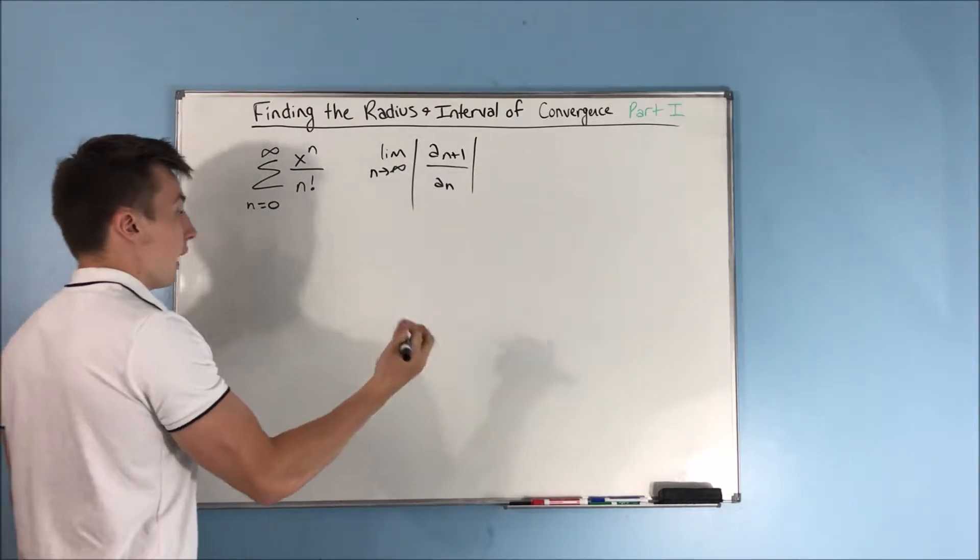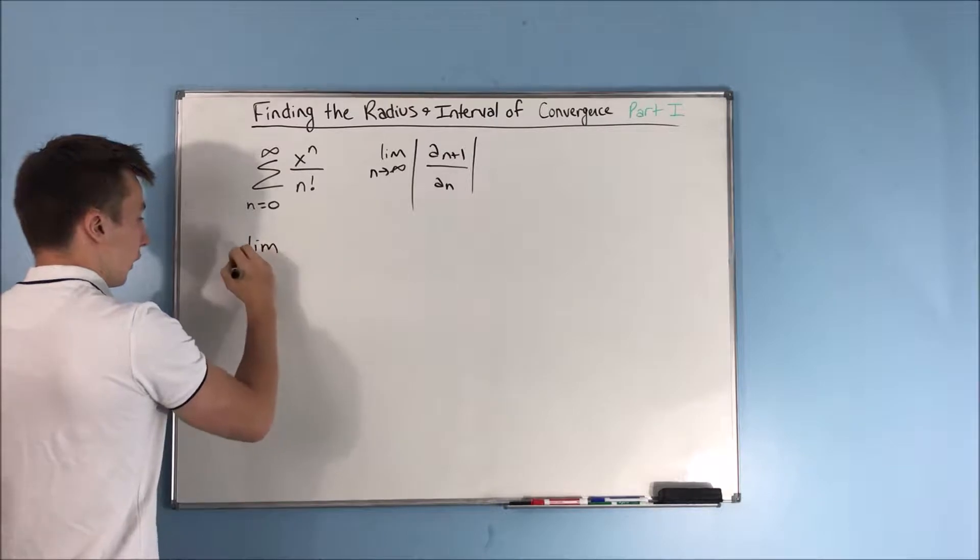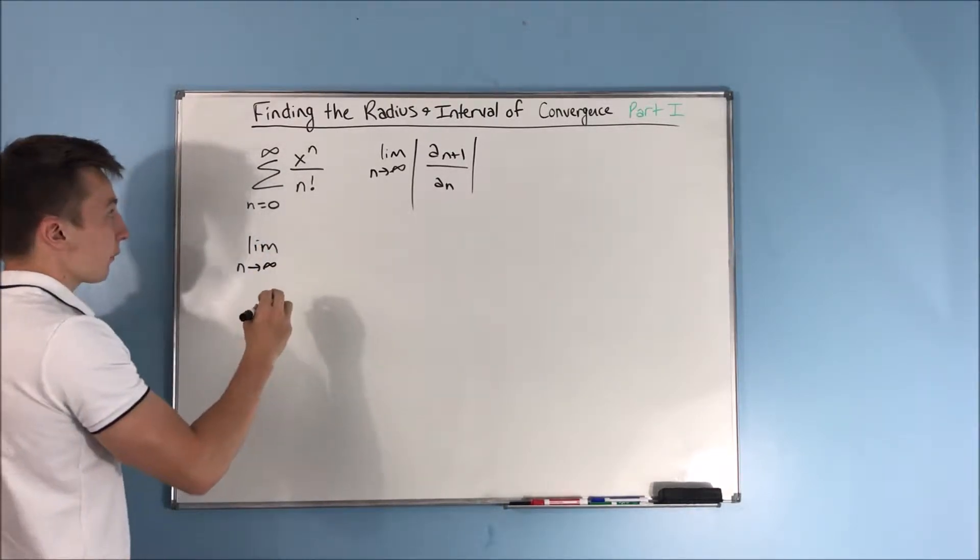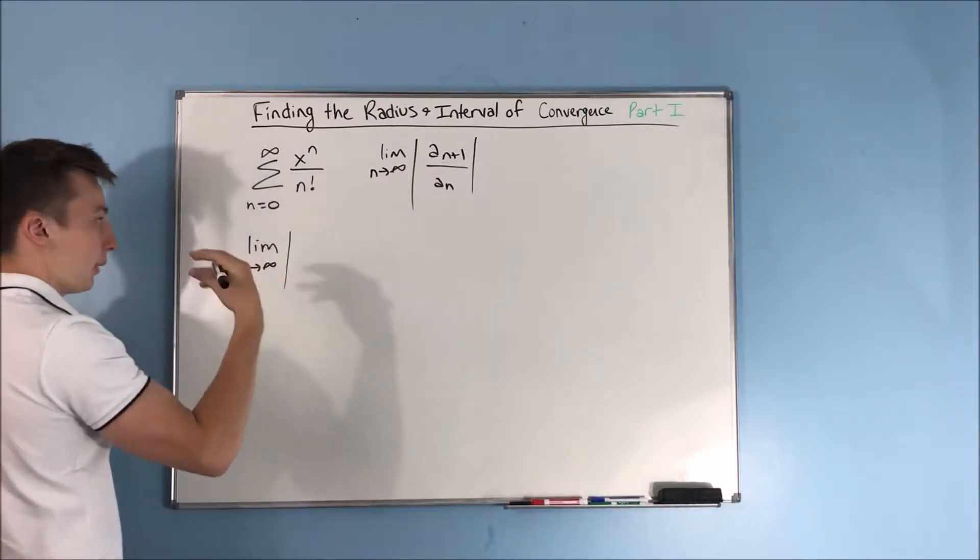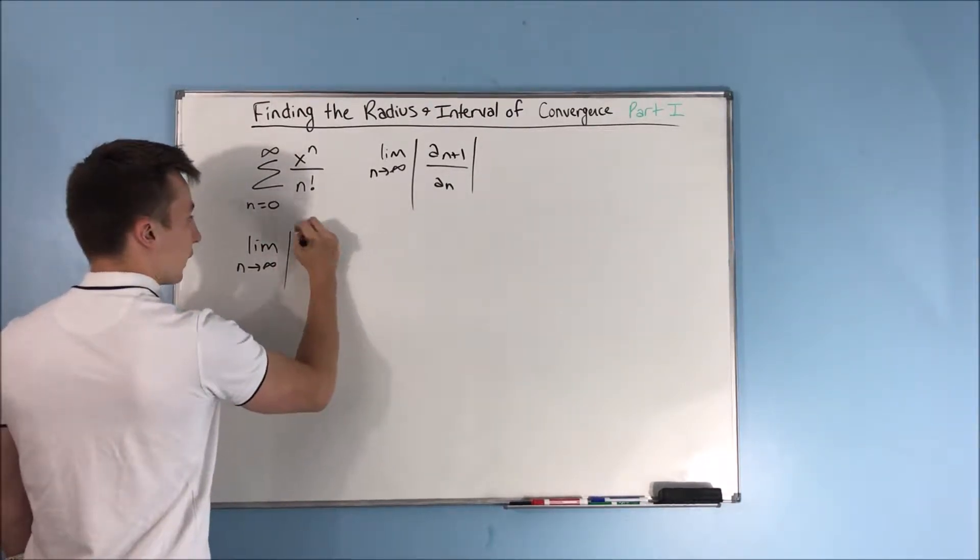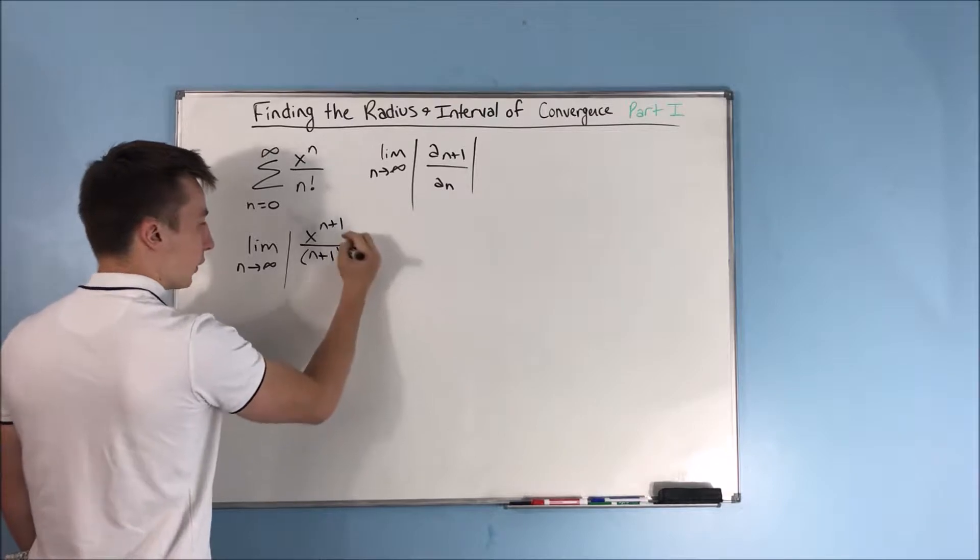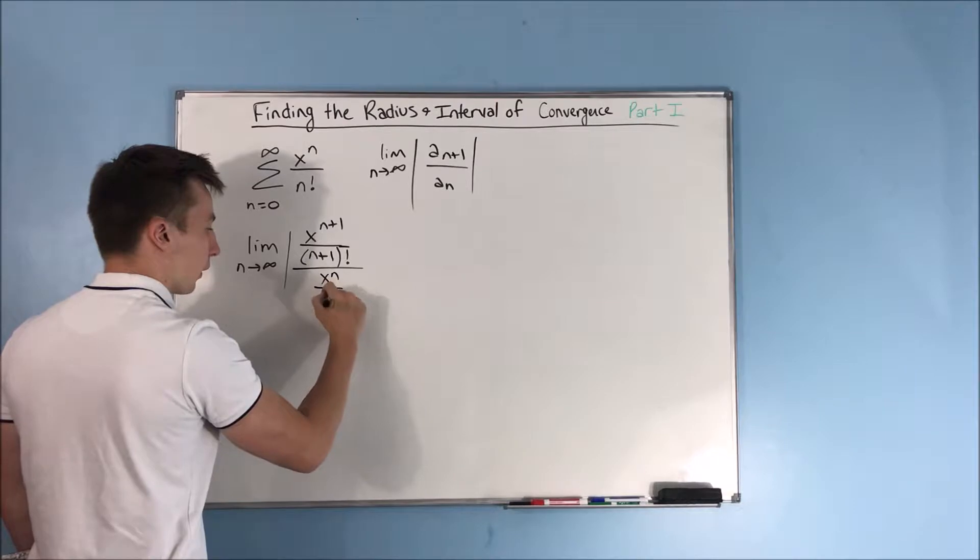Now if we do that, we get the limit as n approaches infinity of, well, we do our a sub n plus 1, we get x to the n plus 1 over n plus 1 in parentheses factorial, and that's going to be over x to the n over n factorial.